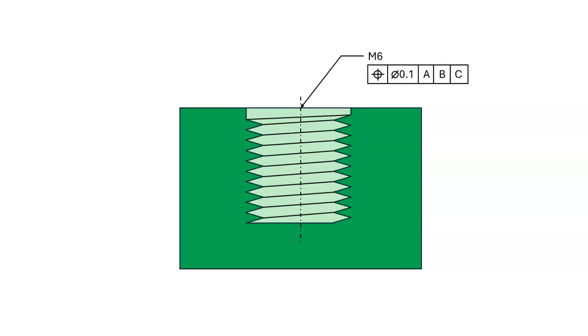To understand why threaded holes are usually called out RFS, consider the reason for specifying MMC. We specify MMC when we want to take advantage of looseness between a clearance hole and a mating part that will help facilitate assembly.